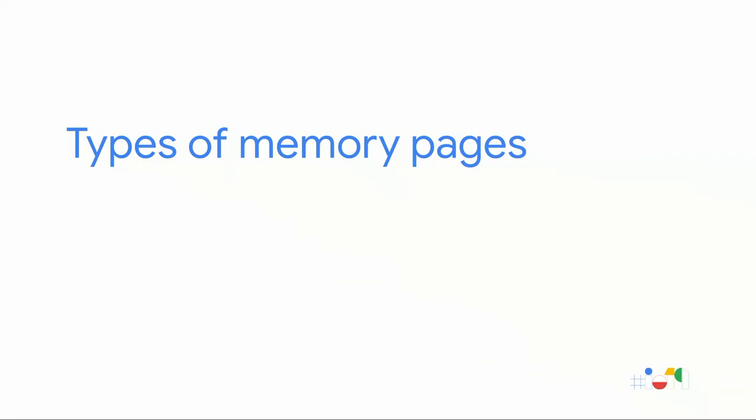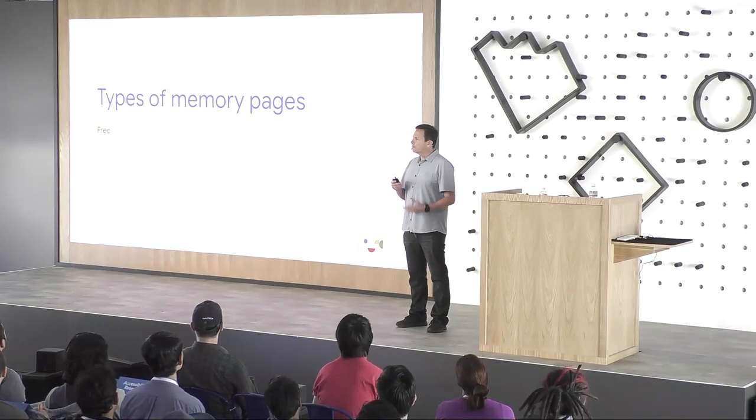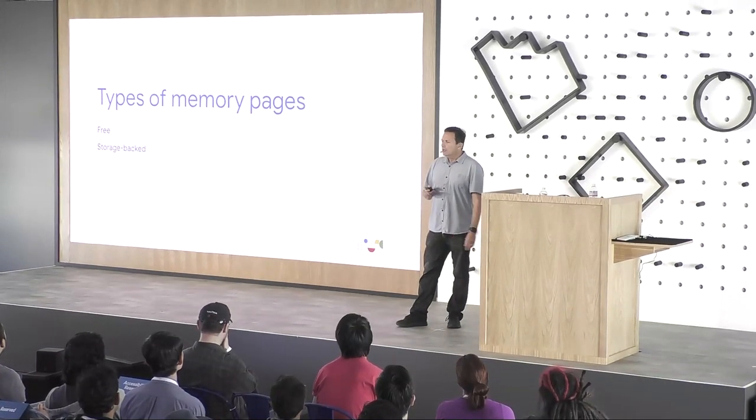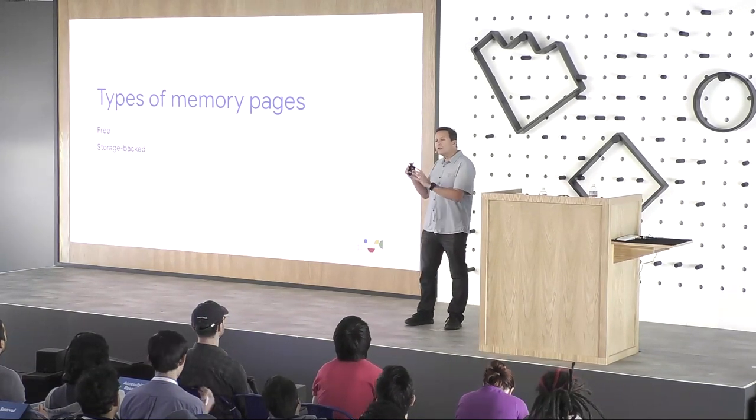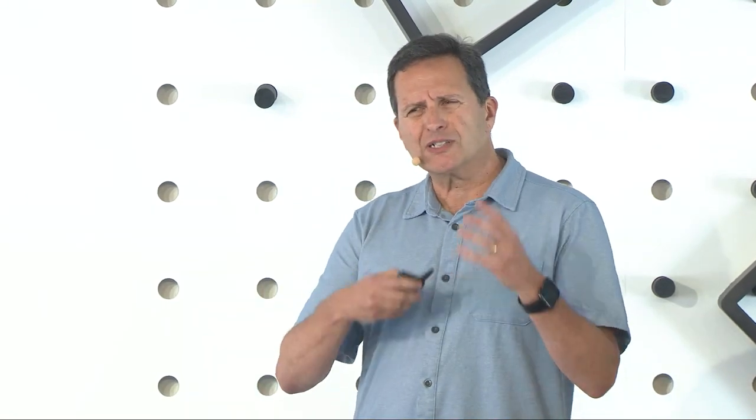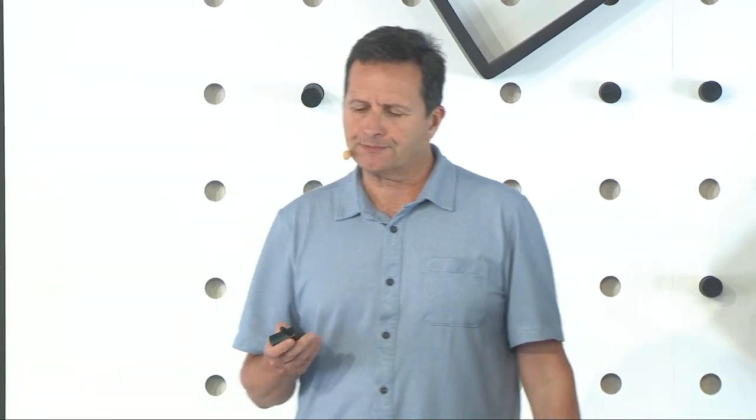Let's go into a bit more detail on the different types of memory. Obviously, we have free memory pages. We also have storage-backed pages — pages stored on secondary storage that are also in memory. When I say 'memory,' I'm usually referring to RAM and using those terms interchangeably; when I talk about secondary storage, I'll refer to it as storage. There are also clean pages — storage-backed pages that have not been modified — and dirty pages, which have been modified. Anonymous memory is memory you allocate through malloc.